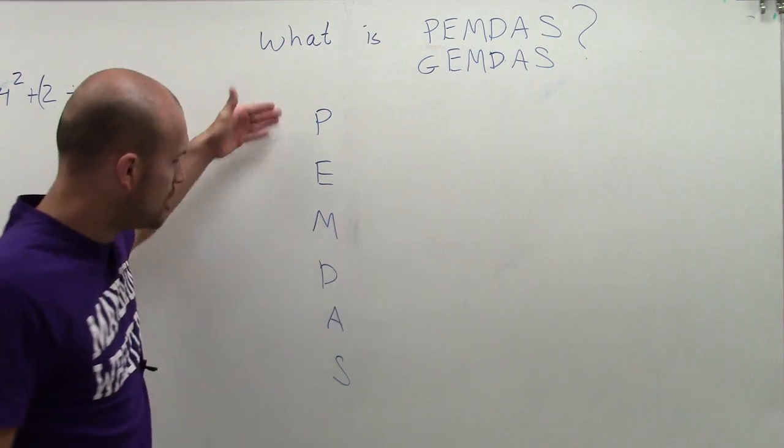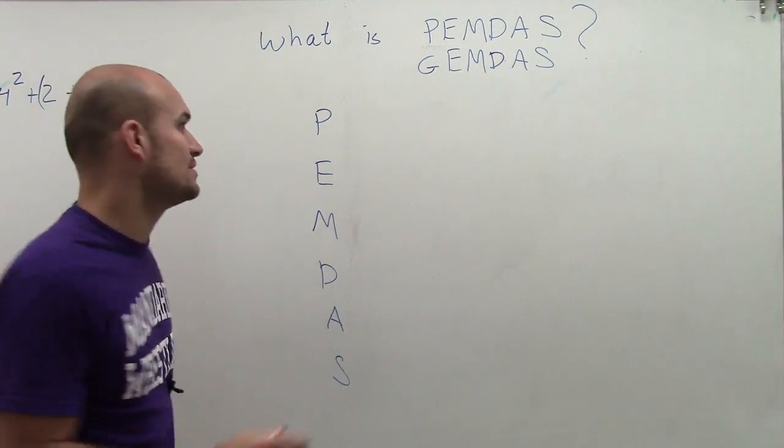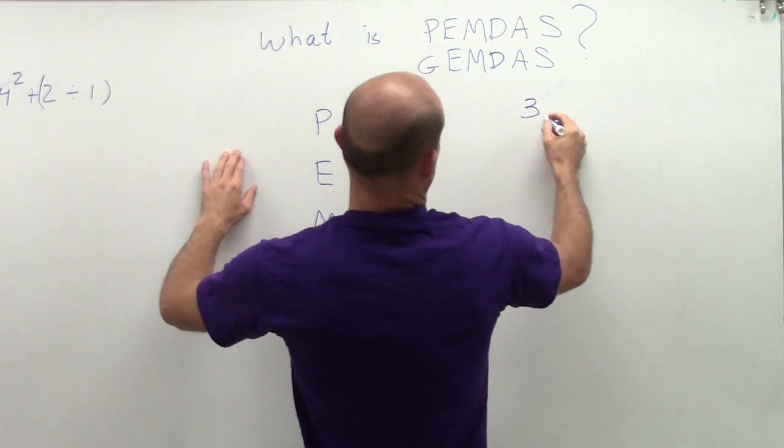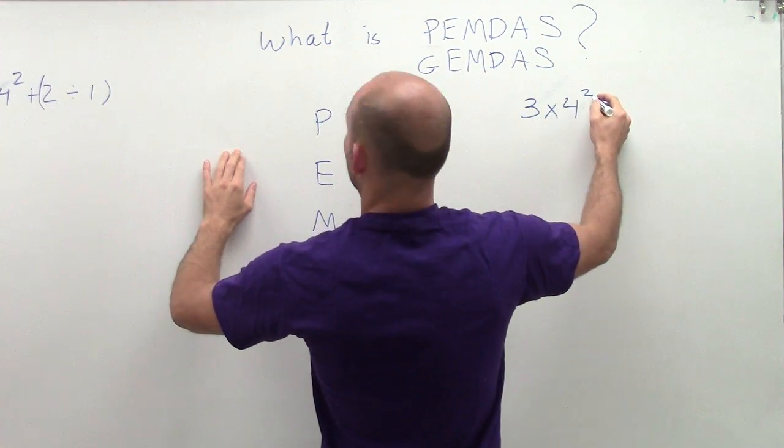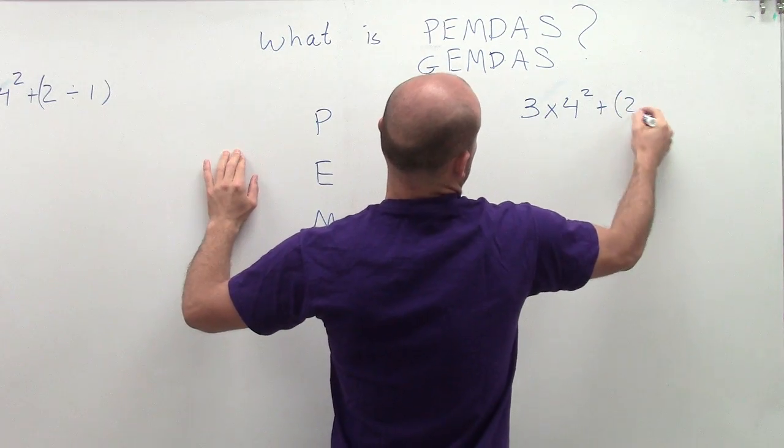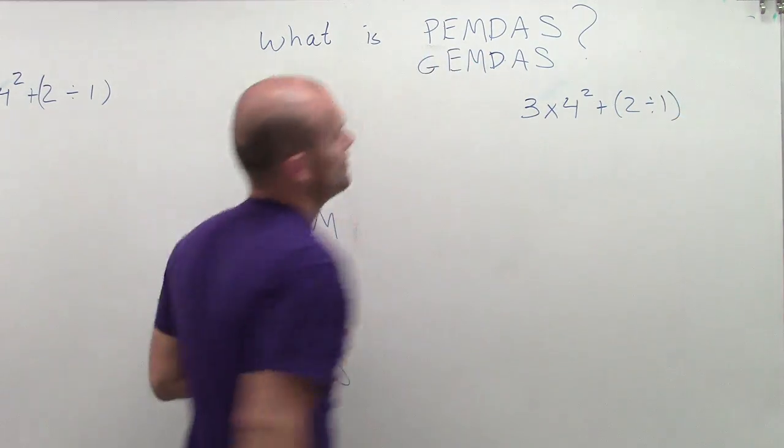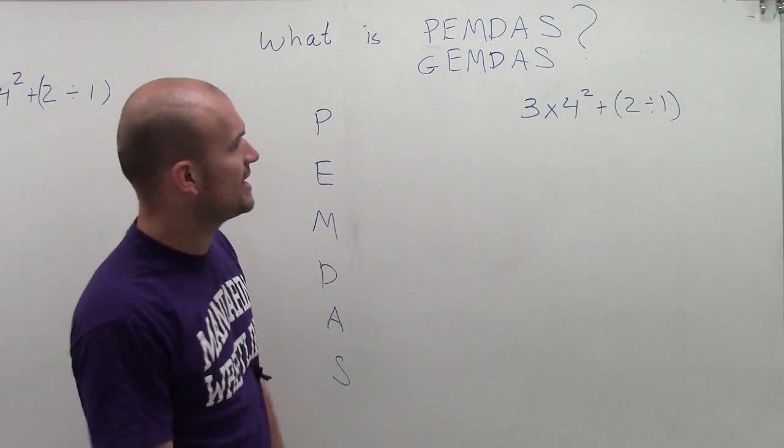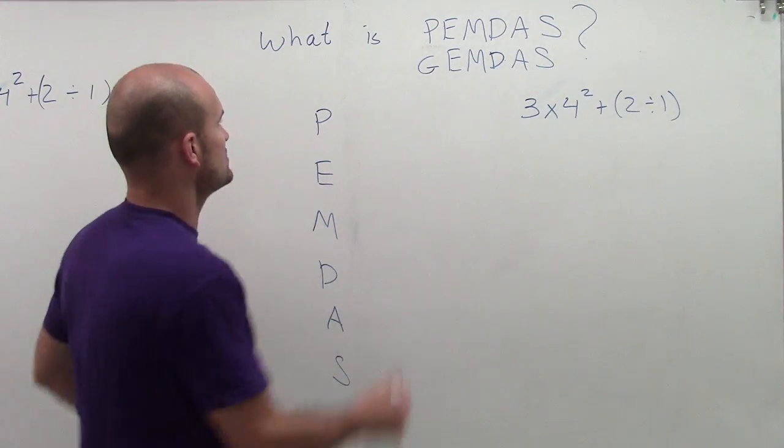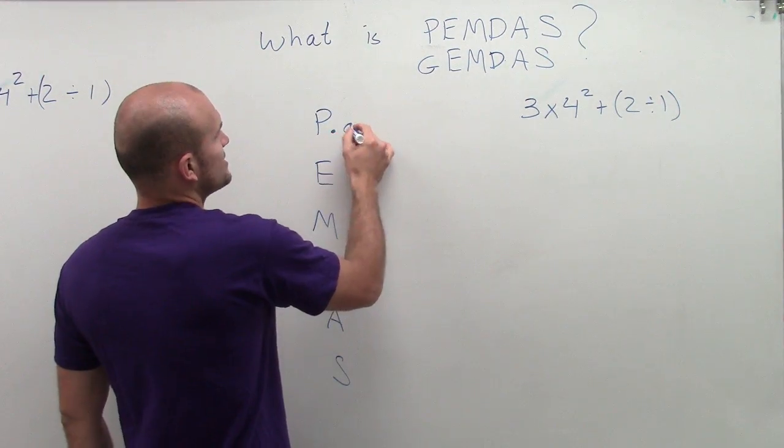OK. So PEMDAS. First thing you ever want to do, and let's actually take a look at an expression. 3 times 4 squared plus 2 divided by 1. So let's take a look at an expression that has all of that in there. So the first thing that we need to make sure we do is our parentheses.